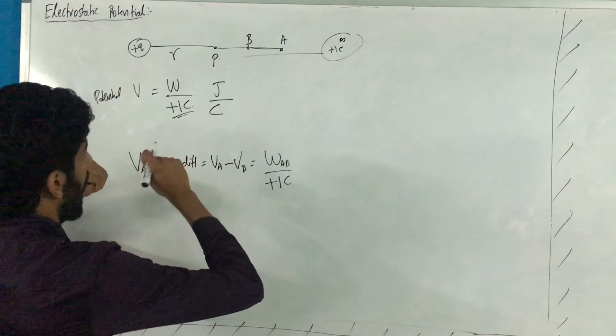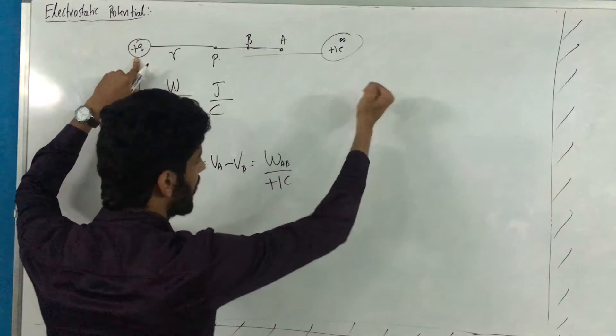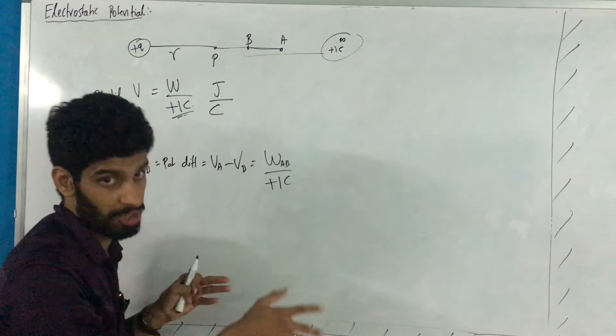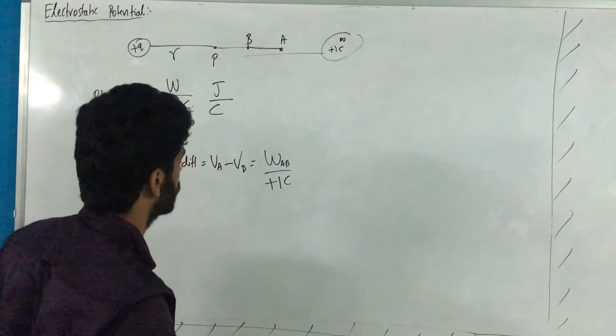I have to do work in bringing that unit positive charge because this positive charge repels the source charge. Every time I get it close, there will be a repulsive force between this positive charge and the source positive charge. So against that electrostatic repulsive force I have to do some work, and whatever work I do is exactly equal to the potential energy, or electrostatic potential.